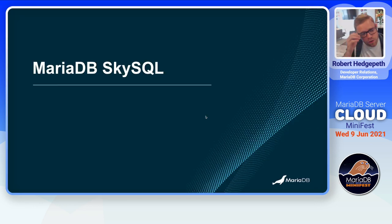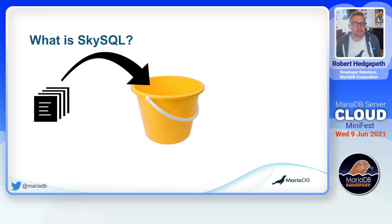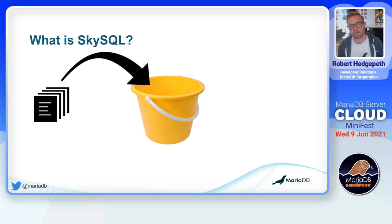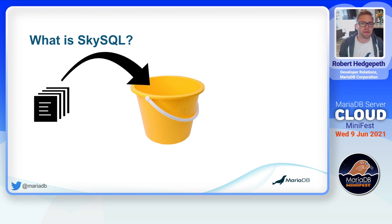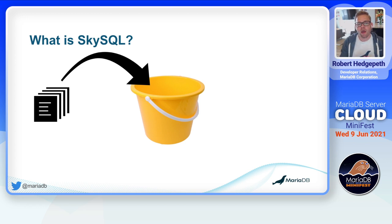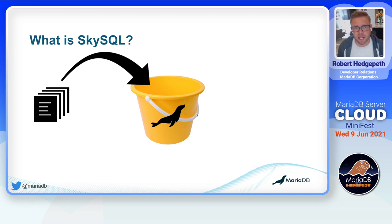Now let's go ahead and dive in and talk about MariaDB SkySQL. What is MariaDB SkySQL? For that, I like to start with a very simple example. You can see I've got this yellow bucket, with some files pointing into it. This is meant, in the simplest sense, to represent what a database is — simply, at the very lowest level, a way that we can persist information or data. And of course, if you're attending this mini-fest, you understand that MariaDB is a database.